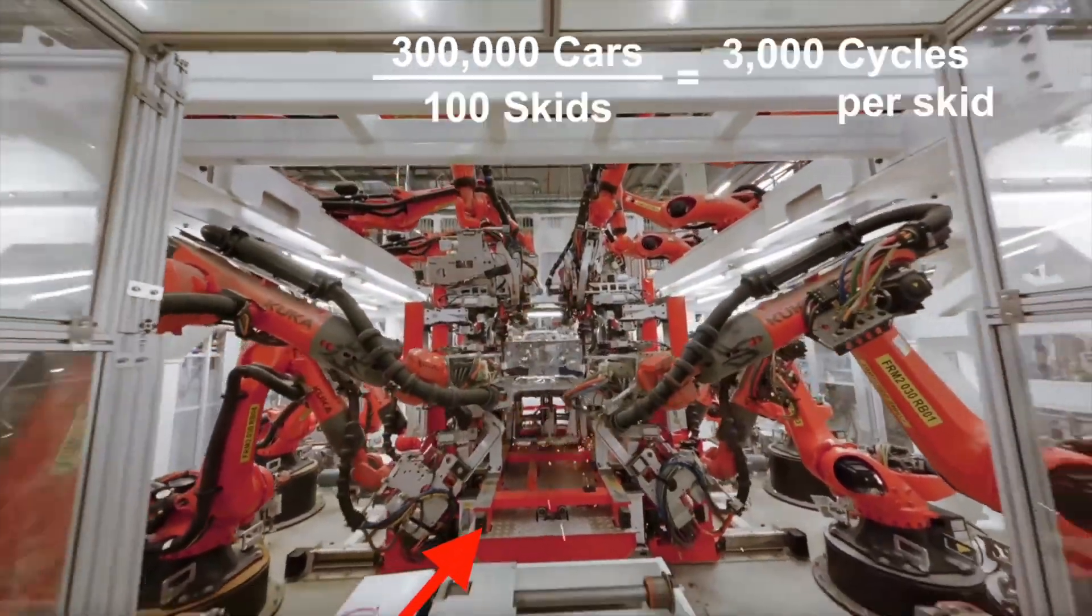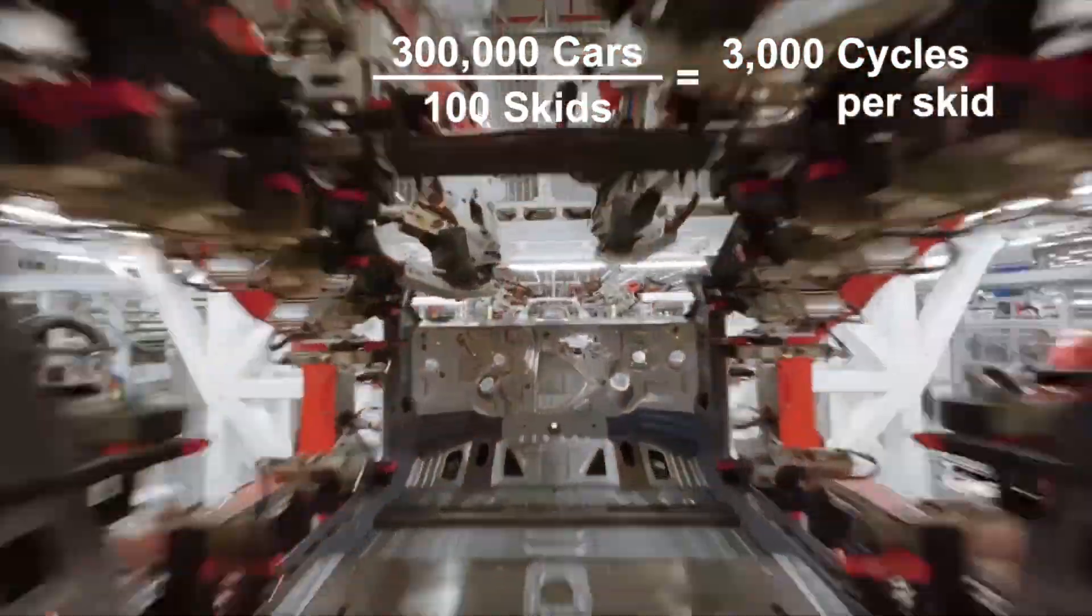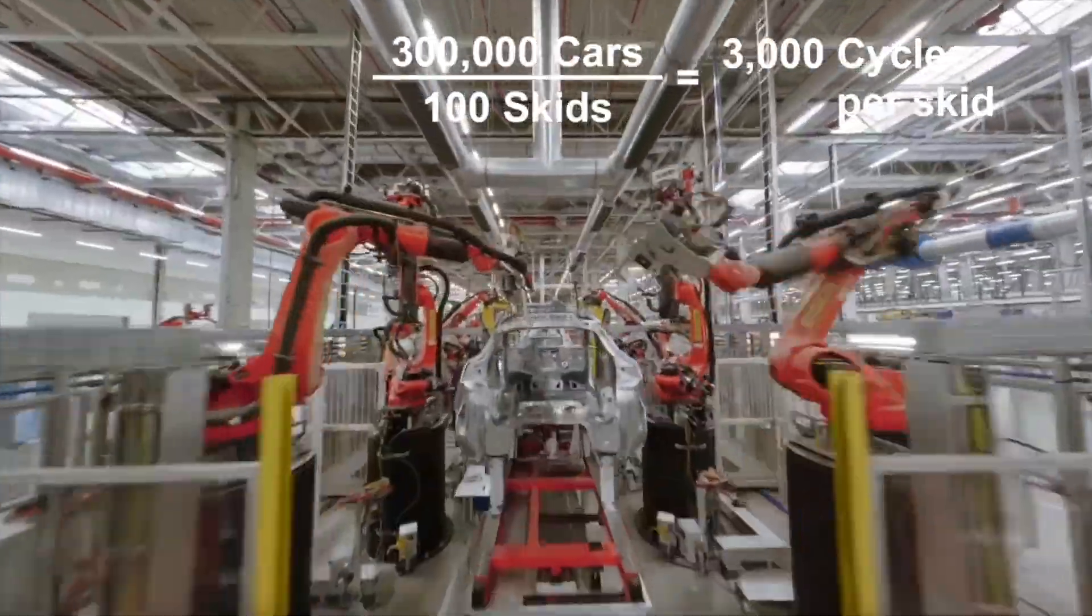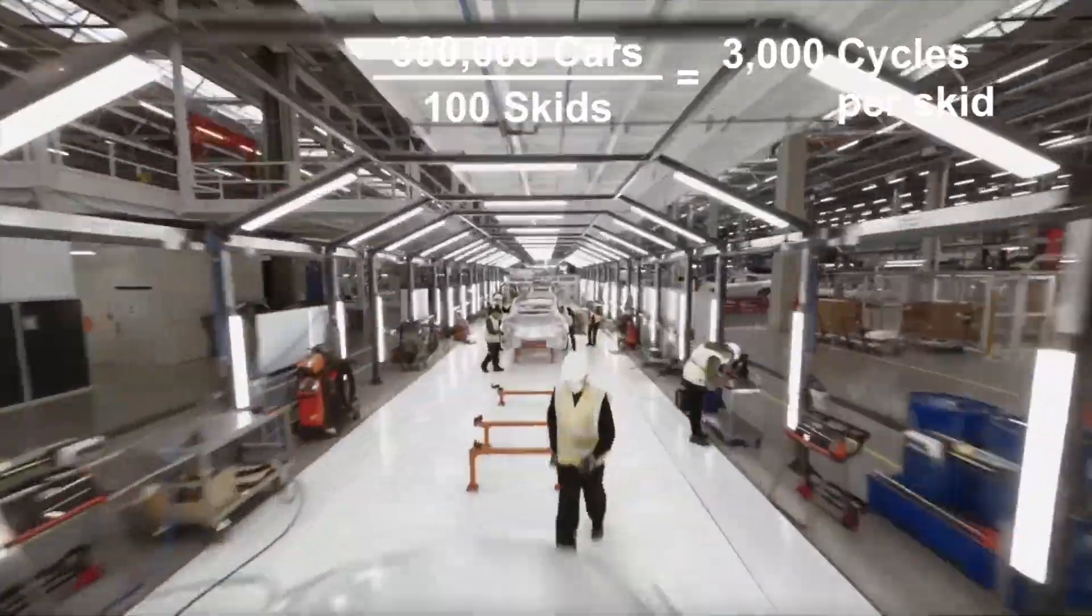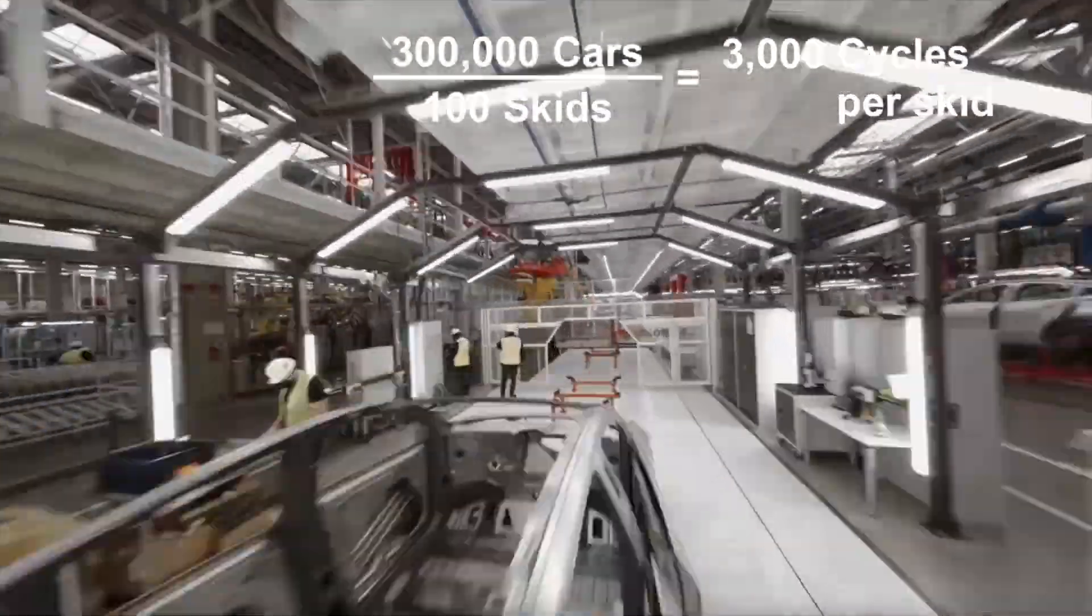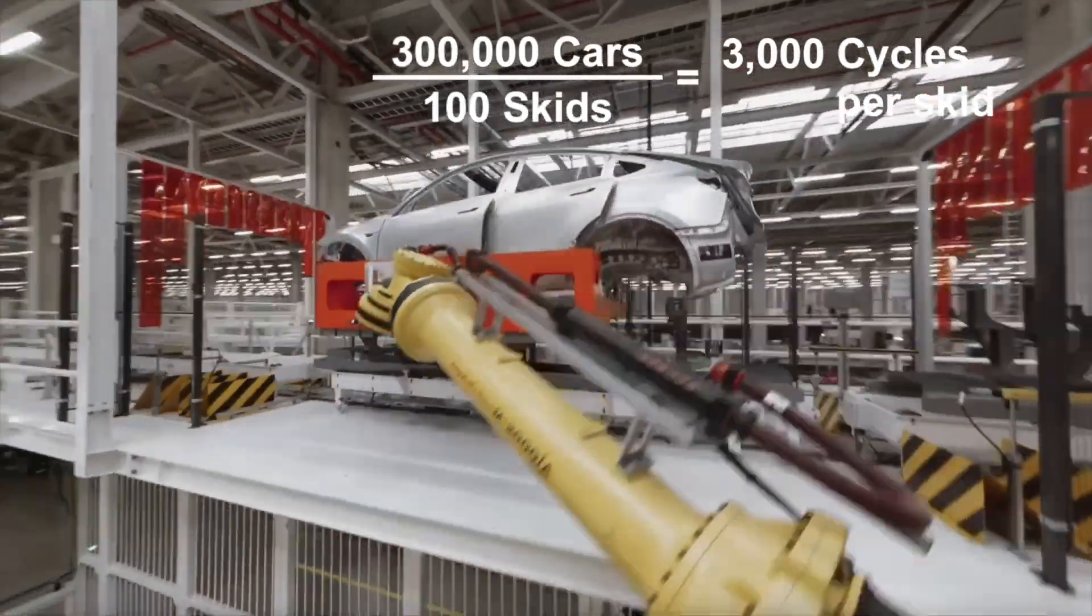Each of the 100 skids endures roughly 3,000 cycles per year, and at times, these skids have caused problems, raising a critical question. Do they fail due to fatigue or unexpected outlier loads? So let's dive into the math and understand if these skids can sustain such loads and how long will it take before these skids need to be replaced.